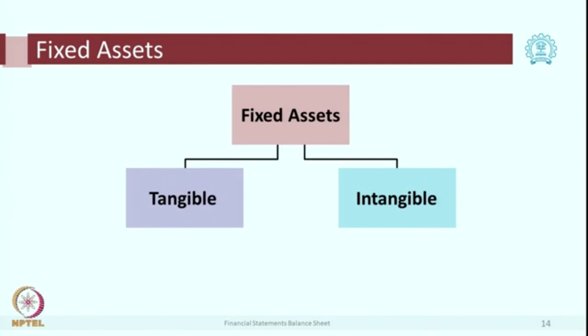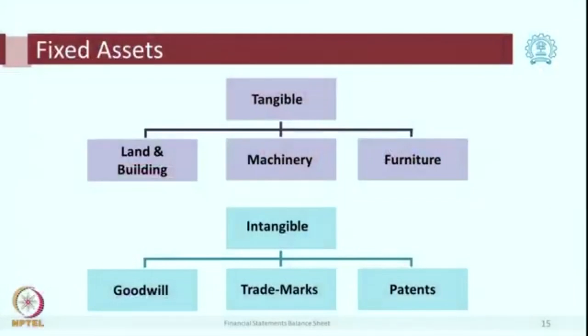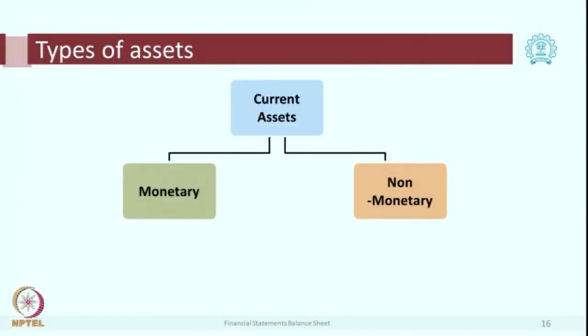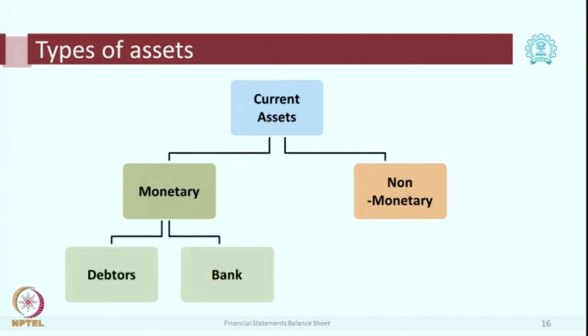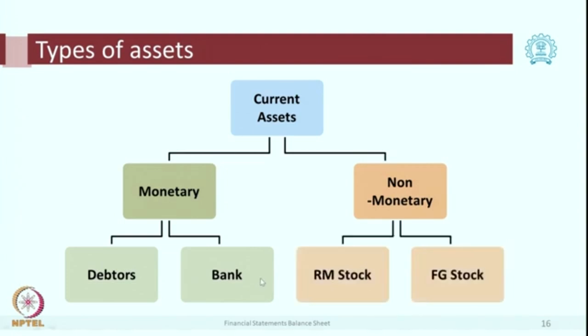Tangible fixed assets include land, building, plant, machinery — things we can see which have a longer life. Intangible assets we cannot see or touch, but they have value and are very important. Examples include software, apps on mobiles, and patents. Current assets have a life of less than one year. There are two major types: monetary and non-monetary. Monetary examples include debtors and bank balances; non-monetary includes inventory such as raw material, finished goods, and work-in-progress stock.